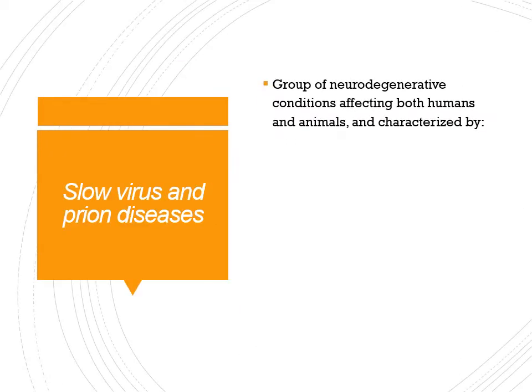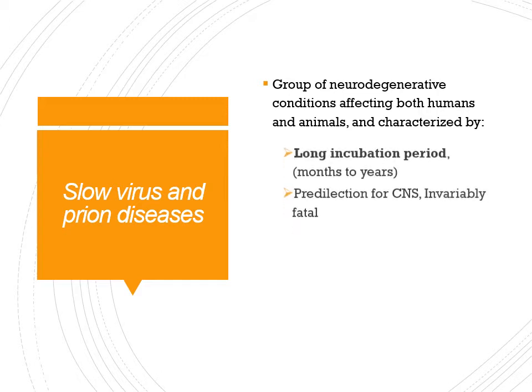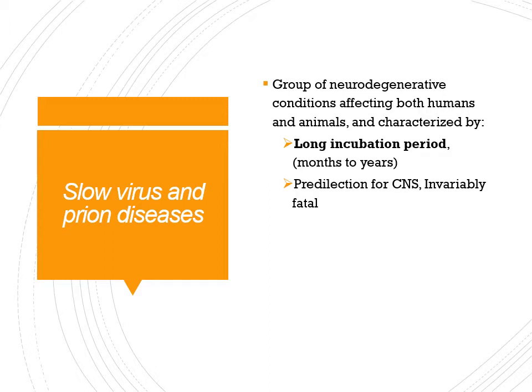The features are the same for both slow virus disease and prions: they cause neurodegeneration, meaning degeneration of the neurons, and they can affect both humans and animals. A key characteristic is a long incubation period — as the name 'slow virus' suggests, the time from infection to symptom manifestation is very lengthy, ranging from months to years.